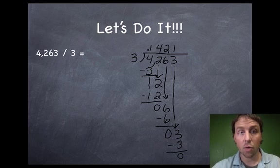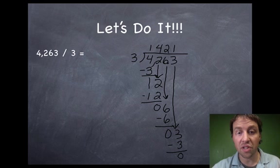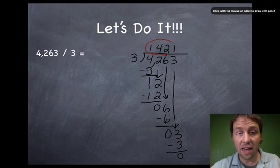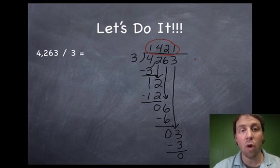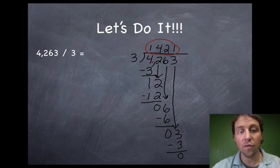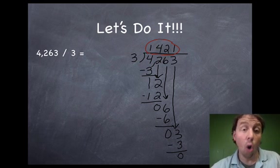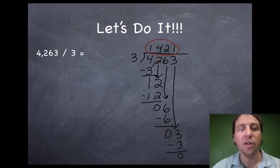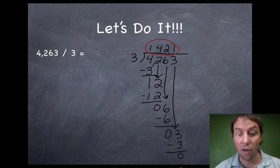So the question 4,263 divided into 3 groups. Each one of those groups is going to have 1,421. So 4,263 divided by 3 is 1,421. Or 1,421 times 3 equals 4,263. Cool.